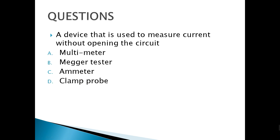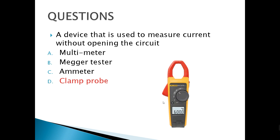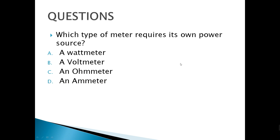A device used to measure current without opening the circuit is called the clamp probe or clamp ammeter. Next, which type of meter requires its own power source? The ohmmeter requires its own power source because it needs a battery to function.